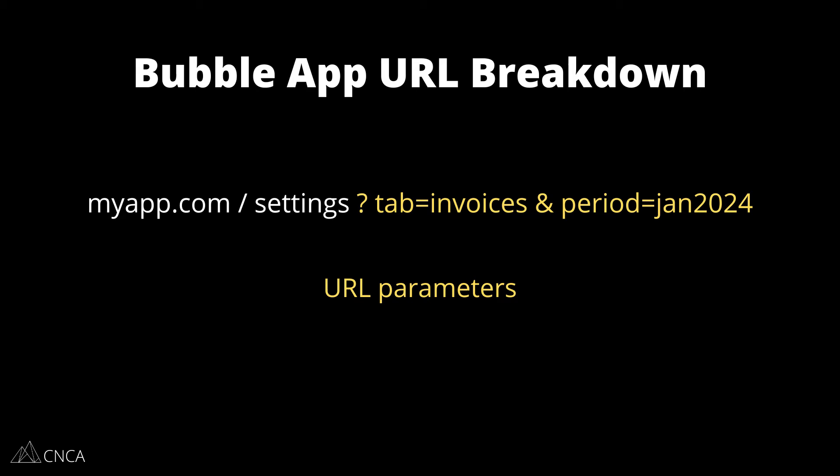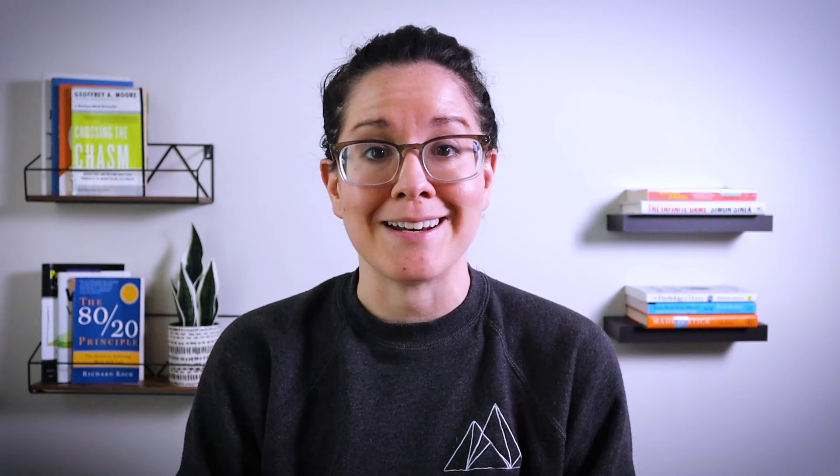Another way that you can send information to the URL is through URL parameters, and this is better if you're working with more dynamic data. A parameter is made up of a key and value pair, so you can swap out the values as needed. Bubble has ways for you to extract the values of your parameters to carry out whatever functionality you need, and you can work with multiple parameters at a time.